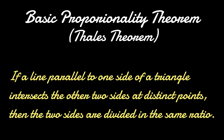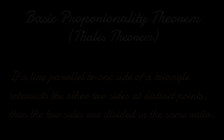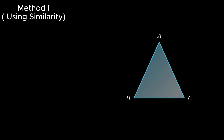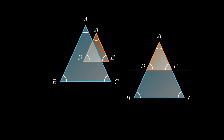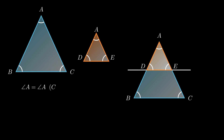Let us prove this theorem by the application of similarity of triangles. Consider a triangle ABC such that line DE is parallel to side BC, resulting in the formation of triangle ADE. The formed triangle ADE and the given triangle ABC can be proved similar, as angle A is the common angle to both triangles.